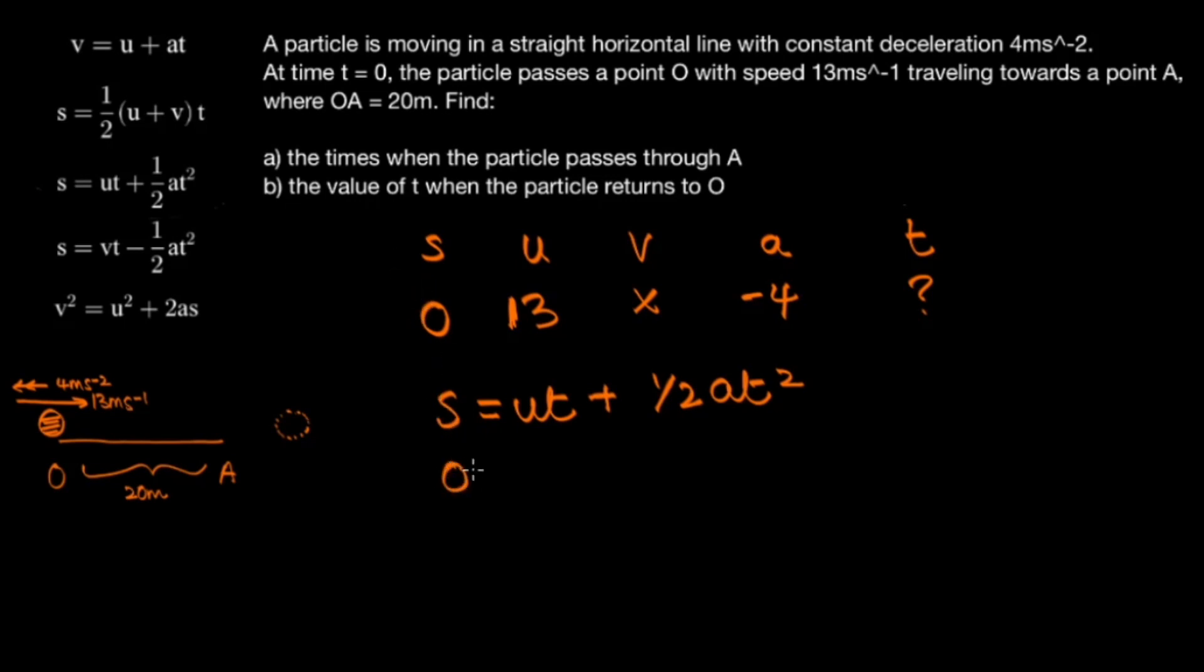So now we have 0 is equal to 13T minus 2T squared. And factorizing this, this will give us T times 13 minus 2T. And so our answers for T in part B are 0 and 13 over 2.